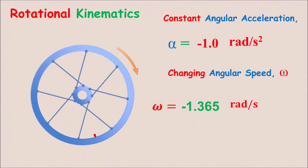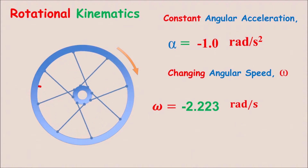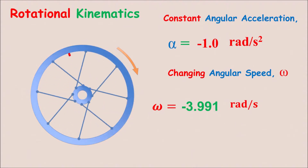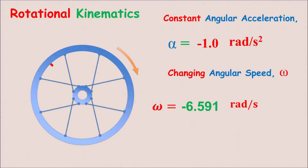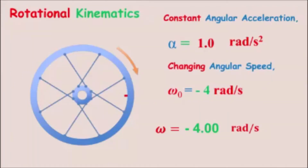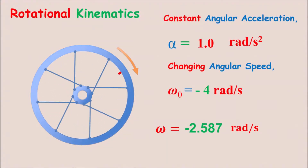This one has an angular acceleration of negative 1 radian per second squared, so it rotates in the negative direction. Now this example has an initial angular velocity of negative 4 radians per second but a positive angular acceleration. Therefore, initially it rotates clockwise and slows down, stops, then changes direction and goes faster and faster.